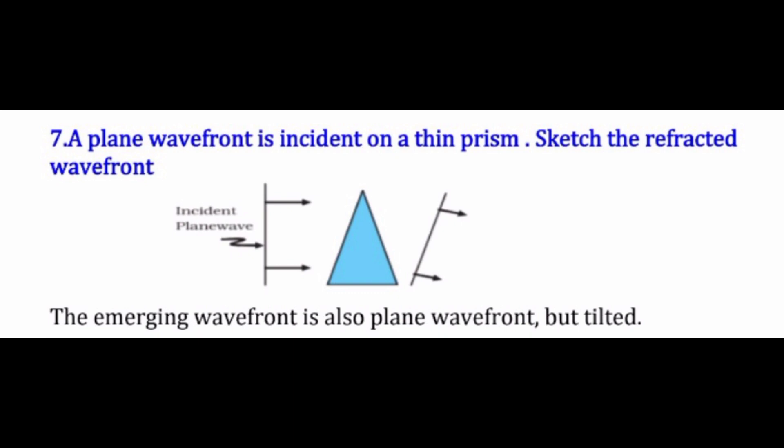The reason is that the speed of light is less in glass than in air. In the lower portion the glass is thick, so the incoming wavefront is delayed there, and that is why the wavefront is tilted as shown in the figure.